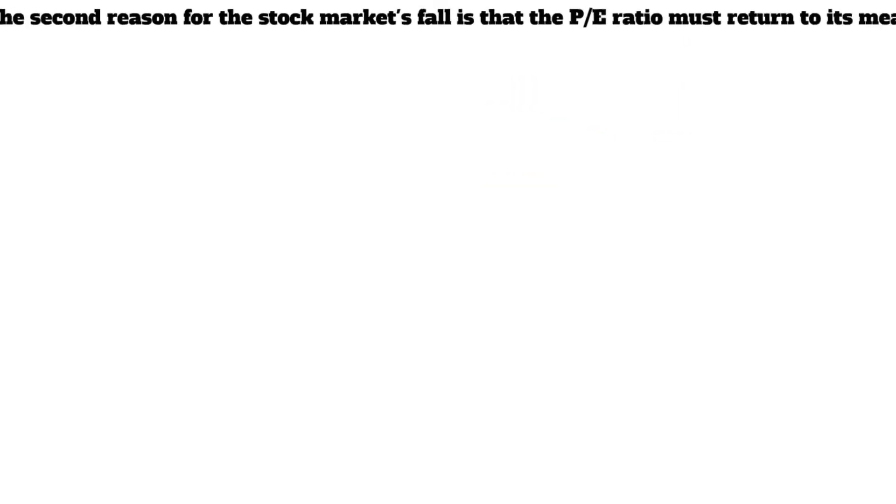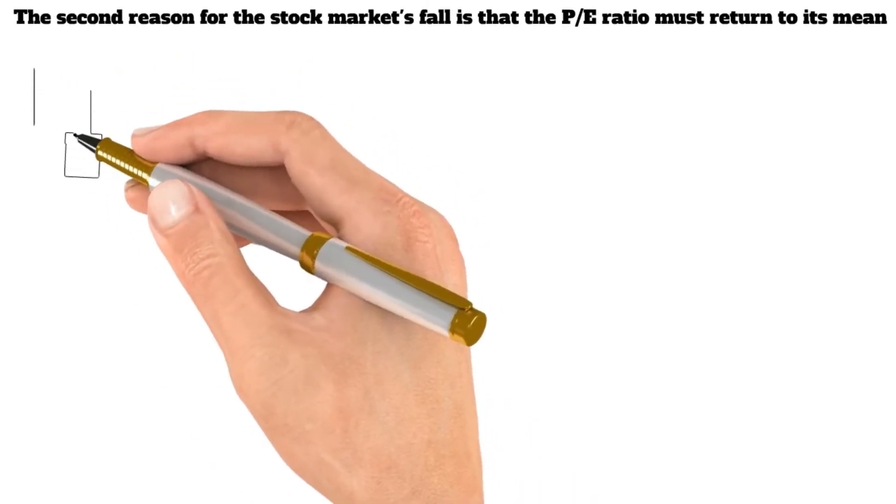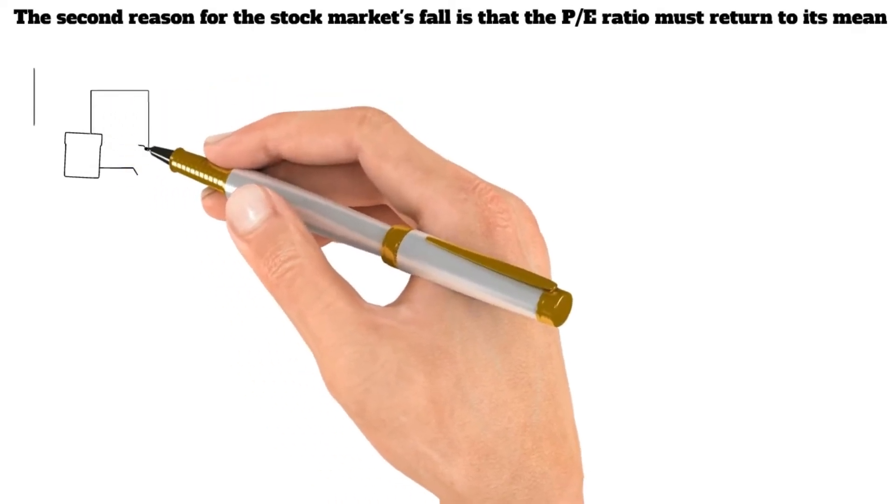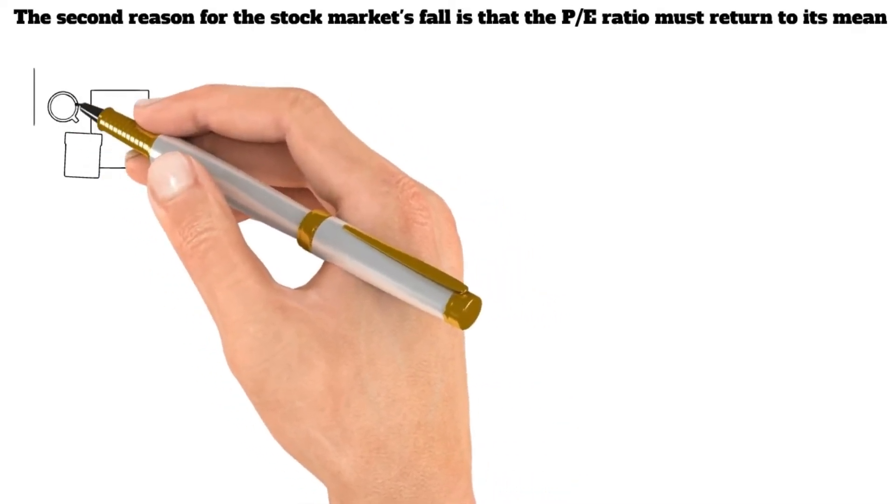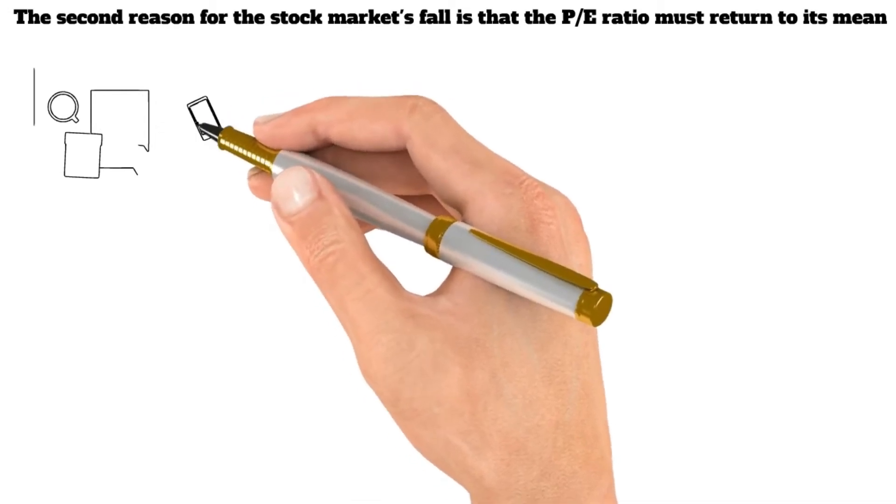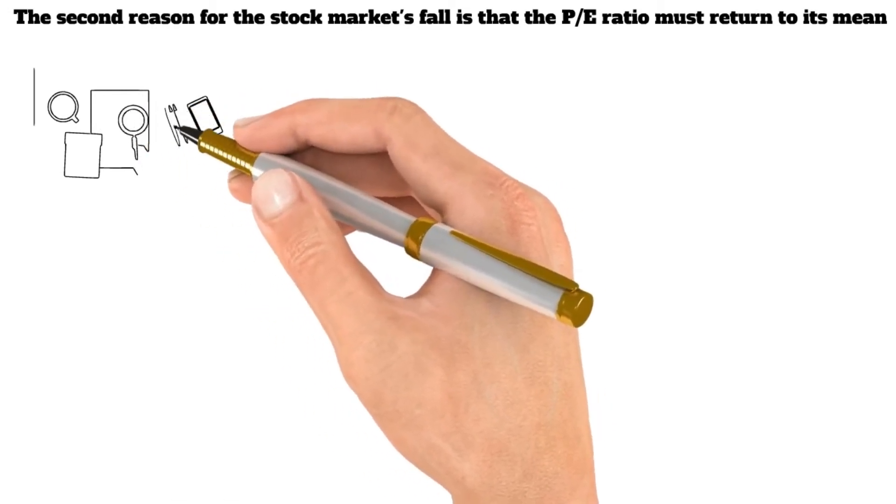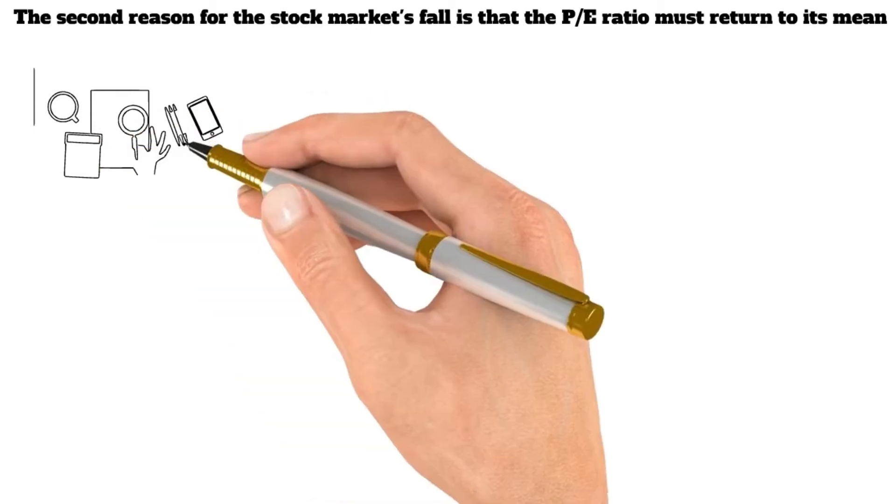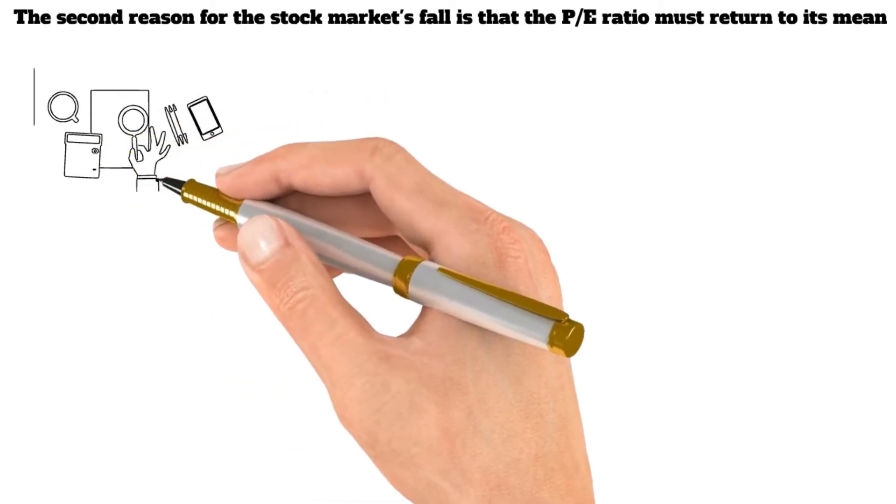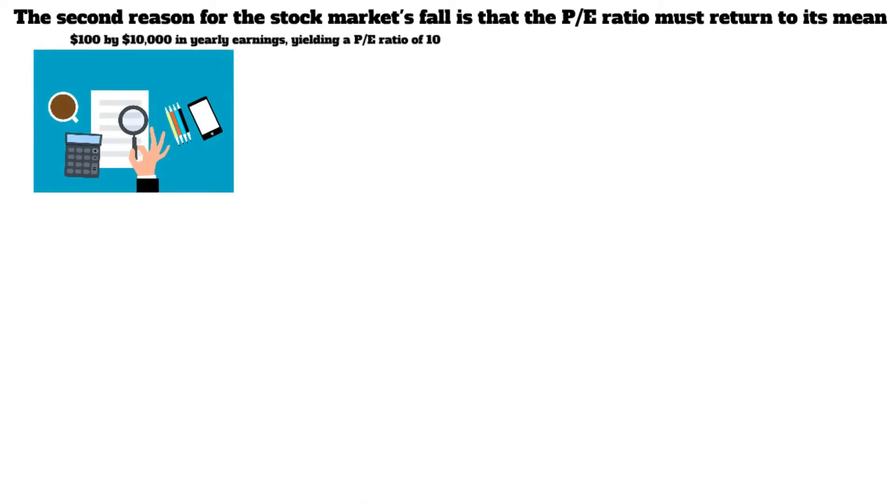The second reason for the stock market's fall is that the P/E ratio must return to its mean. I'll simply simplify and break things down for you. The P/E ratio is calculated by dividing the stock price by the earnings per share. If you accepted an offer to buy a firm for $100 and it makes $10 in profit every year, the P/E ratio would be 10.